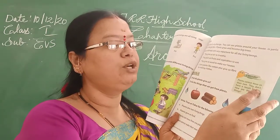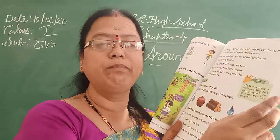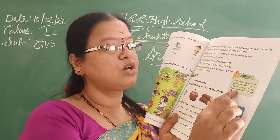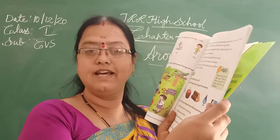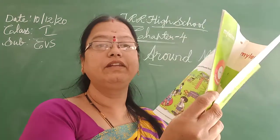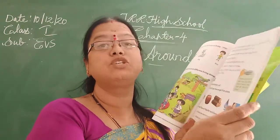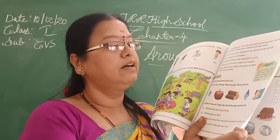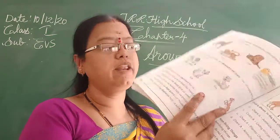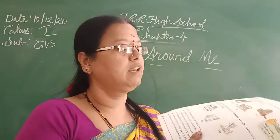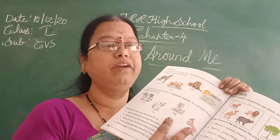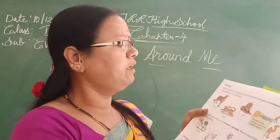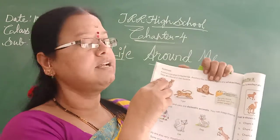Plants don't have a mouth to eat, so how are they living things? They are living things because they give us fruits and vegetables, and they also give us air — oxygen. We breathe oxygen from plants.